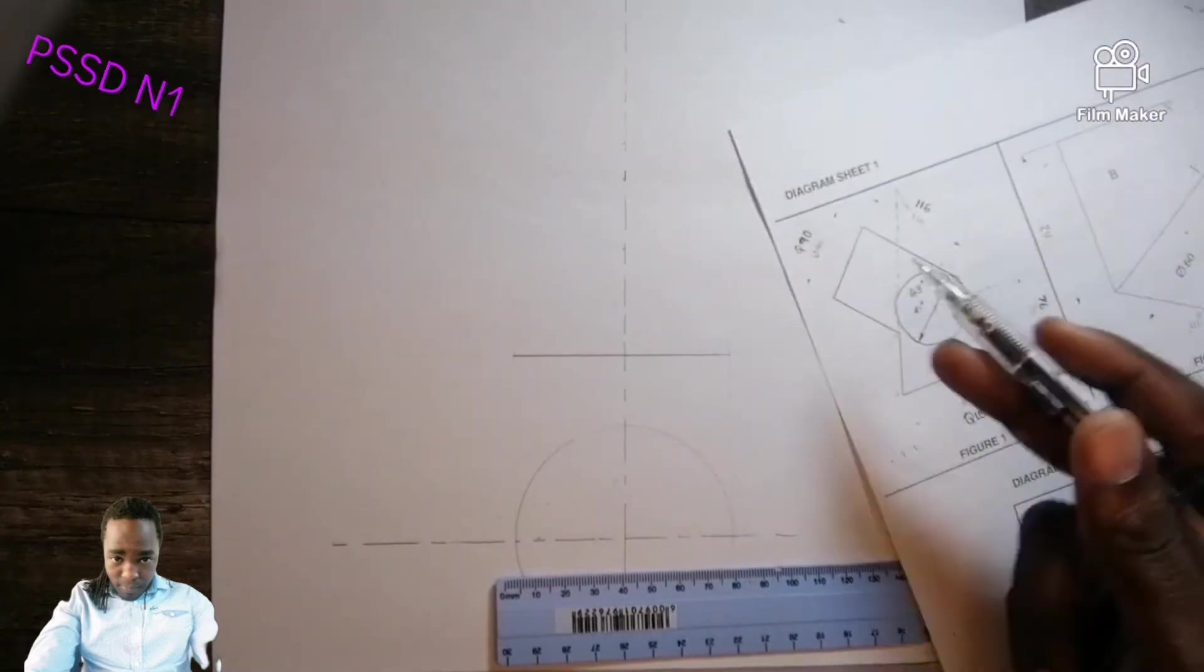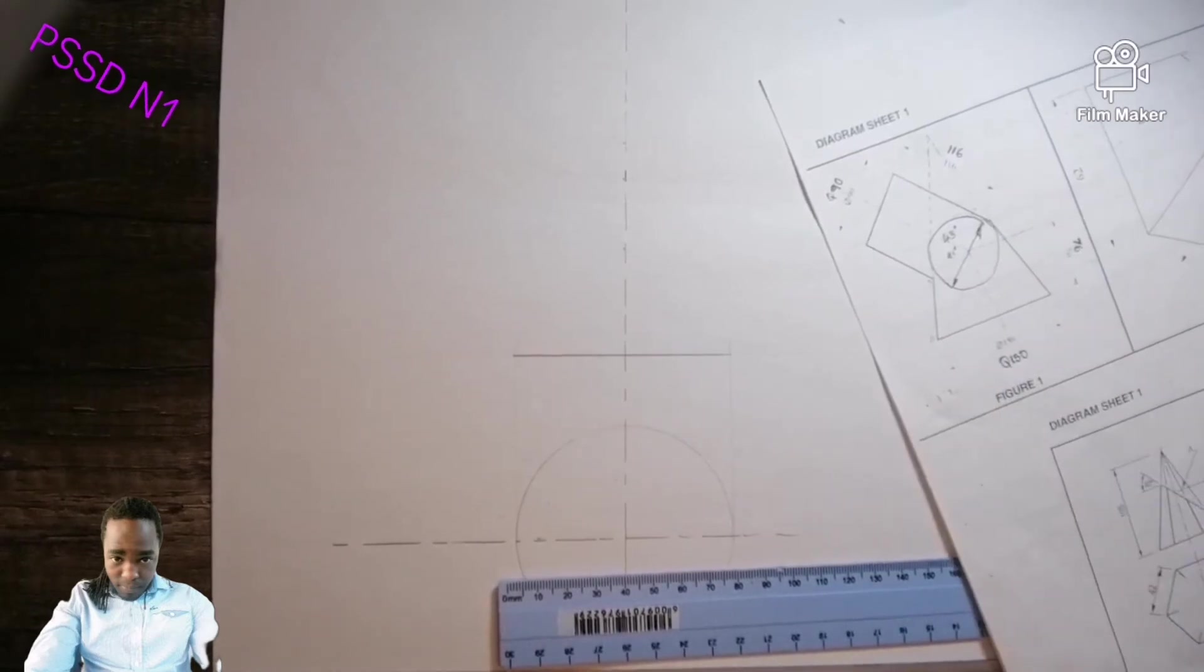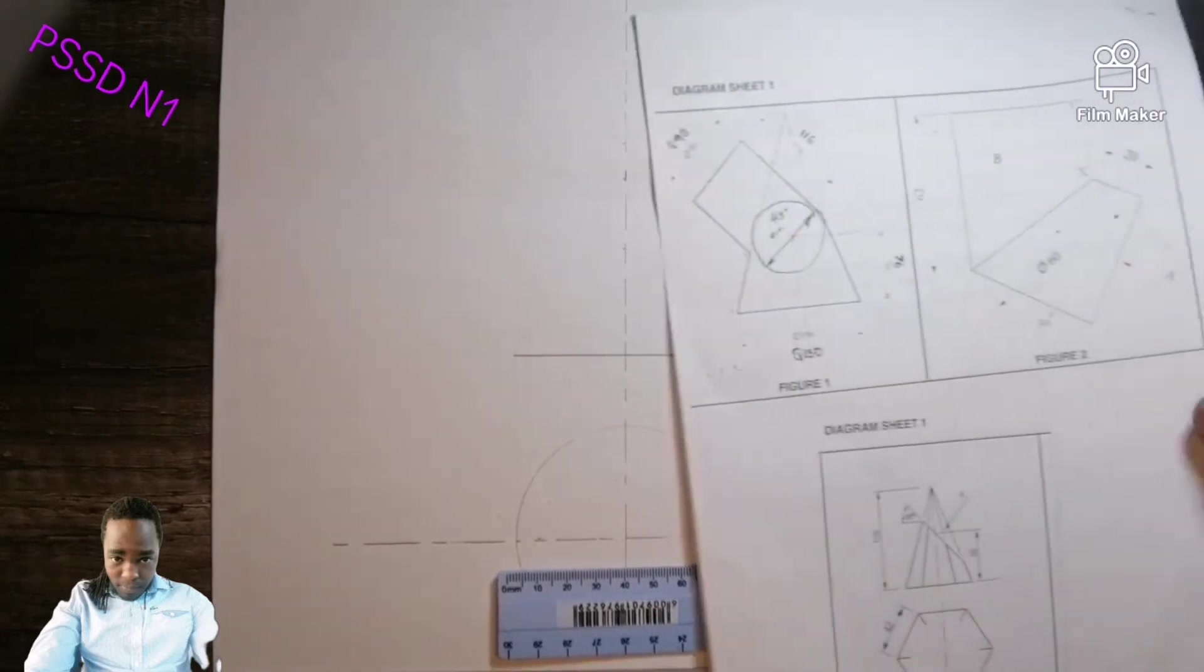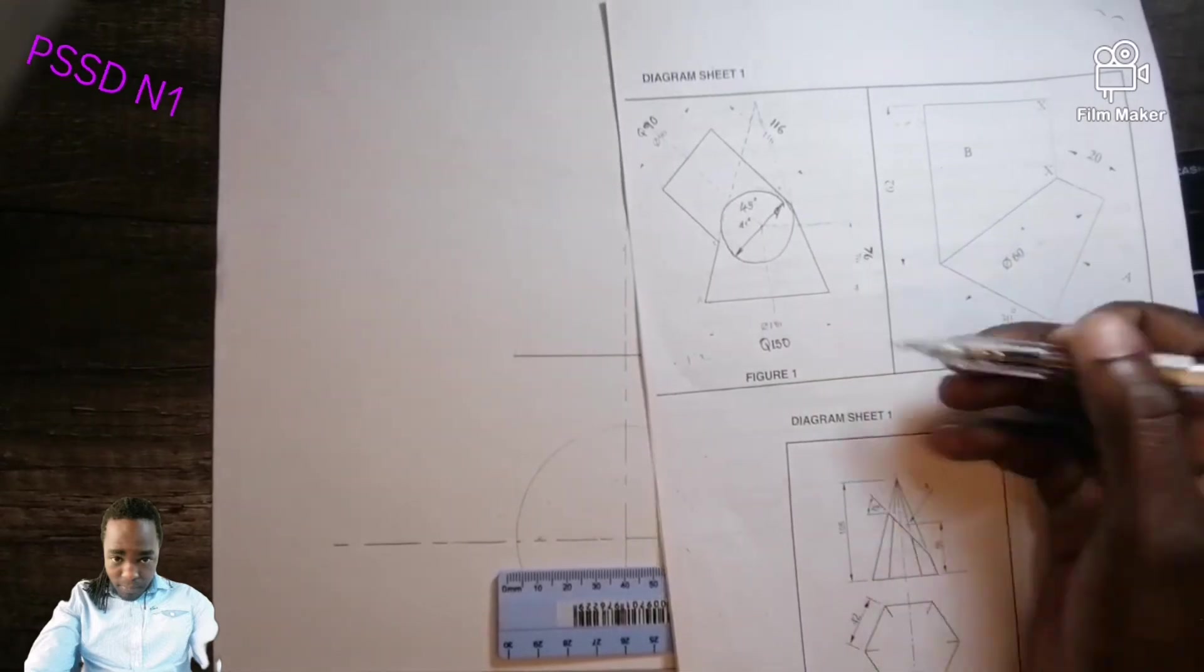Now let's go from here going there. This is how much? 76. But remember because of the scale you must say 76 divided by 2, which is 38.